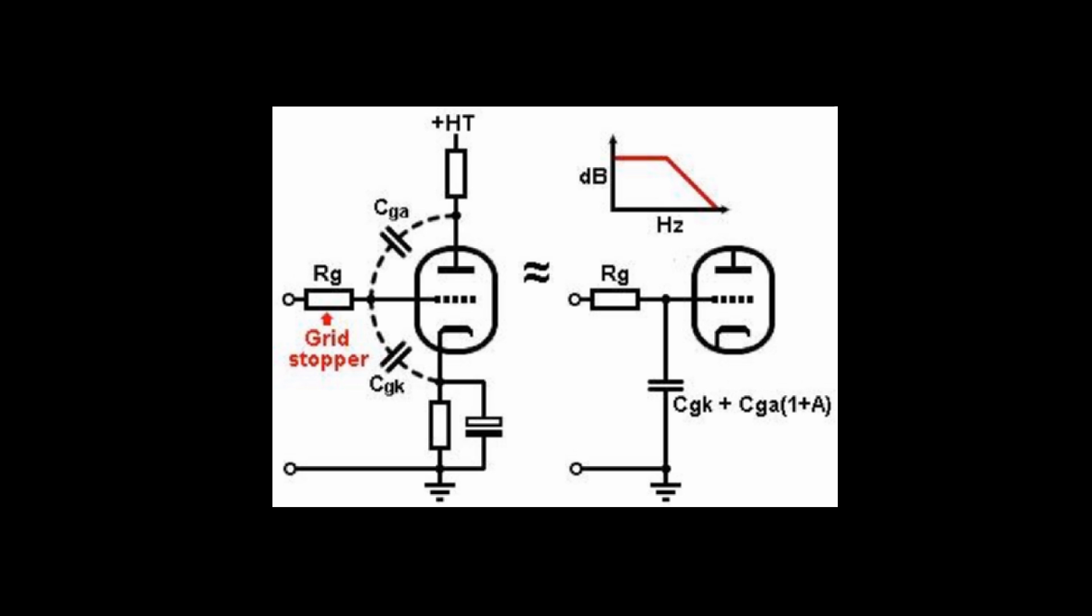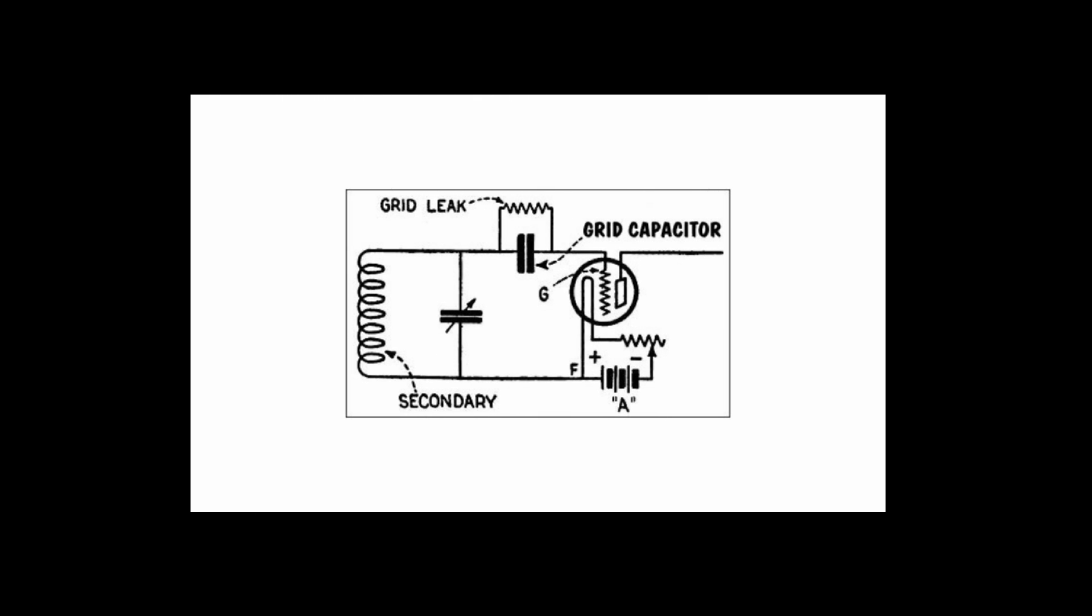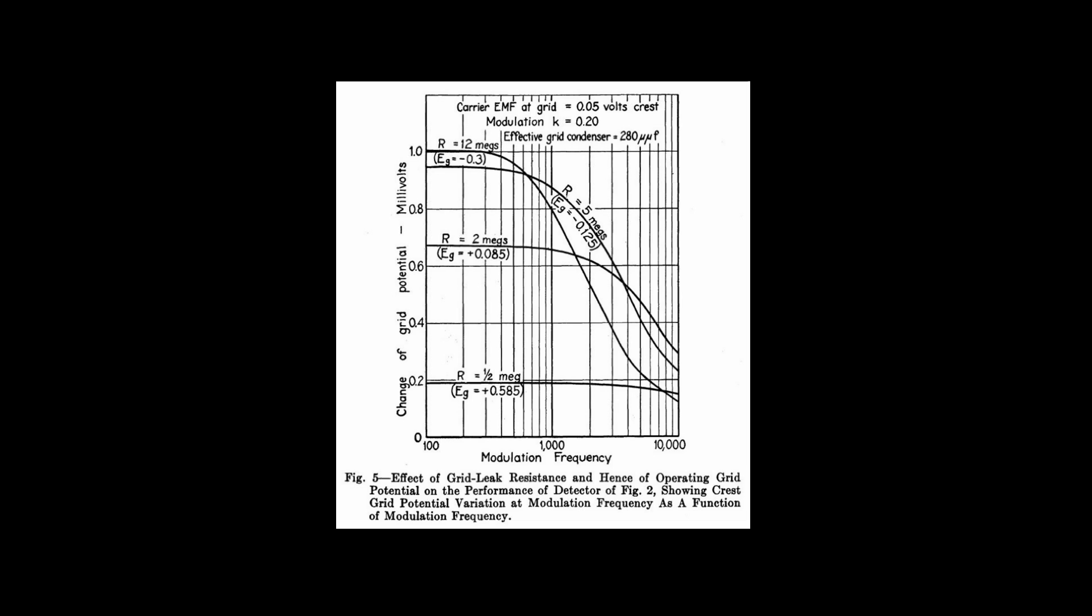We use the grid leak detector only in small signal square law nonlinear detection mode because we want the maximum sensitivity. Does this mean that the audio will be somewhat distorted? Yes, compared to other dynamic range linear detectors, the grid leak detector does produce more distortion. But in small signal operation of the grid leak detector, the highest grid leak that results in desired intelligibility of the demodulated audio will provide the greatest practical detection sensitivity. So we substitute sensitivity for fidelity.